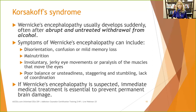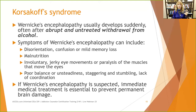Symptoms of Wernicke's encephalopathy include disorientation, confusion, or mild memory loss; malnutrition; involuntary jerky eye movements or paralysis of eye muscles — a key telling sign; and poor balance, unsteadiness, staggering, stumbling, and lack of coordination. The person may not be intoxicated at all — they may actually be experiencing these symptoms because they're not intoxicated. Poor balance and lack of coordination are also symptoms of serotonin syndrome, another medical emergency. If someone starts acting physiologically unusual, pay attention. If Wernicke's is suspected, immediate medical treatment is essential to prevent permanent brain damage.